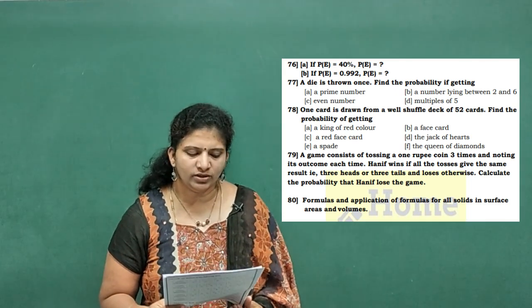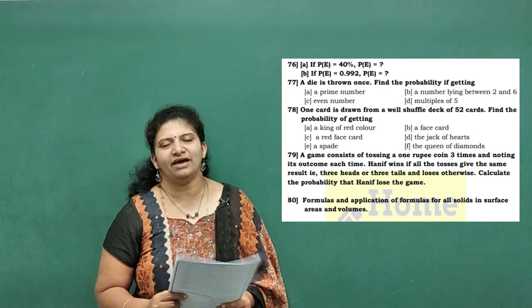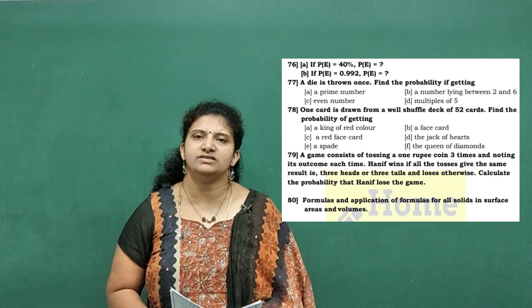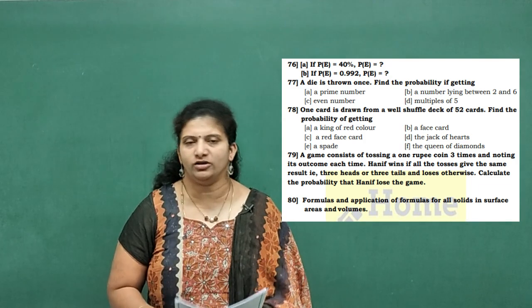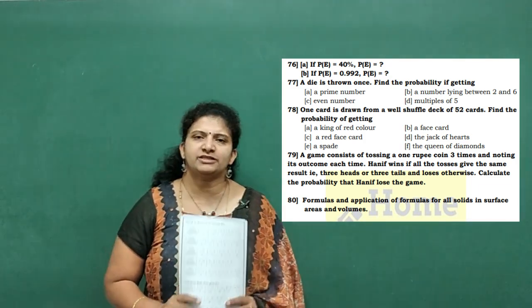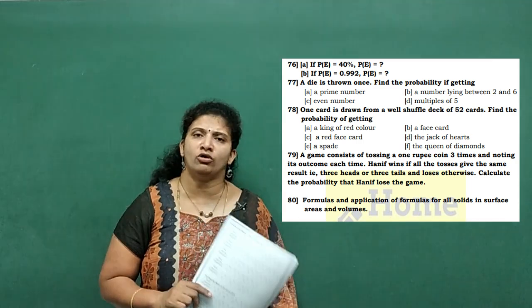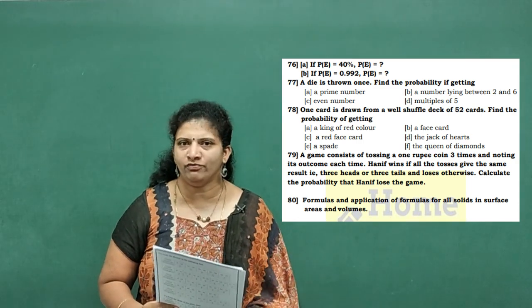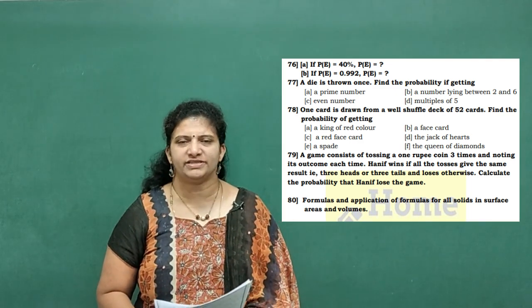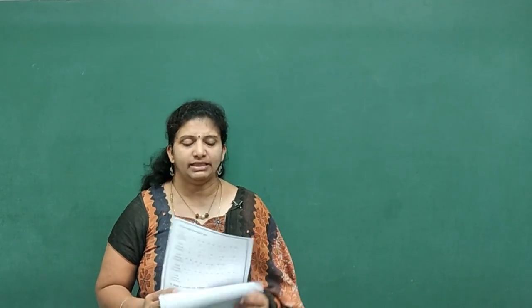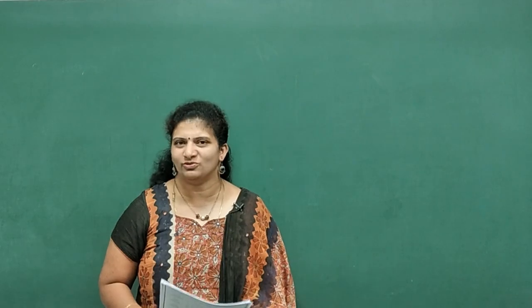Problem 76 onwards — Probability: most expected questions given. Problem 80 — only surface area formulas. Formulas and application of formulas for all solids in surface area and volumes. In this chapter we can expect compulsory one or two formulas; if you know all the formulas, you can do any type of problem. So with this we complete 80 mains of problems — not only 80, there are many more sub-problems to solve.